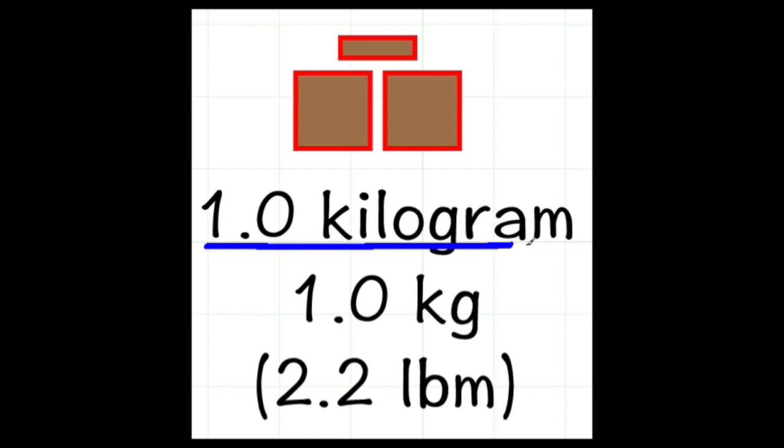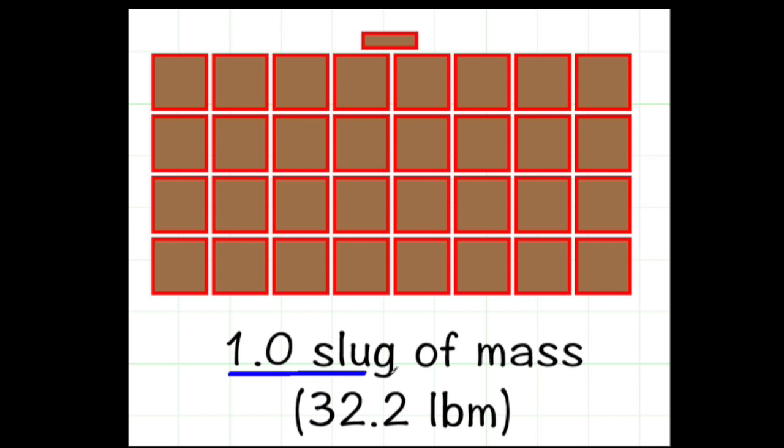So what if I have one kilogram of water? I would have 1, 2, 0.2 of these cubes. Because one kilogram is exactly the same as 2.2 pounds mass. So if I had one slug of mass, I would actually need 32 of these cubes. 1, 2, 3 plus 2 tenths of a cube. Because one slug of mass is the same as 32.2 pounds mass. So you can kind of think of a slug of mass as equivalent to the mass of 32 pints of water or 32 pints of half and half as we looked at in the video.